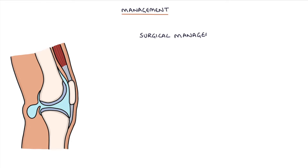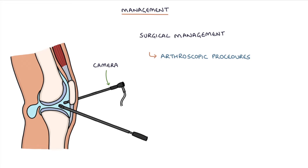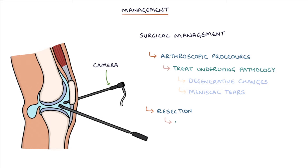Surgical management typically involves arthroscopic procedures, inserting a camera into the knee to treat underlying knee pathology contributing to the cyst, for example degenerative changes or meniscal tears. Resection of the cyst is difficult and the cyst is likely to reoccur, particularly when other knee pathology is present.